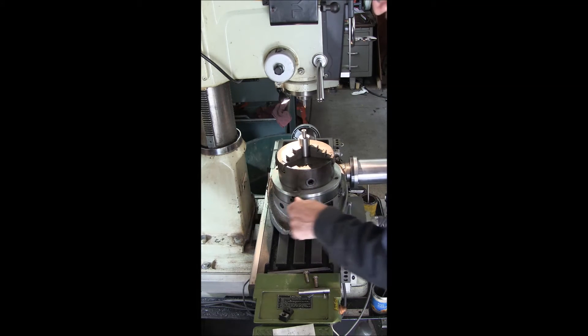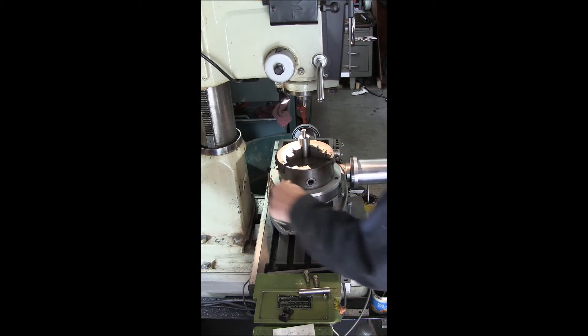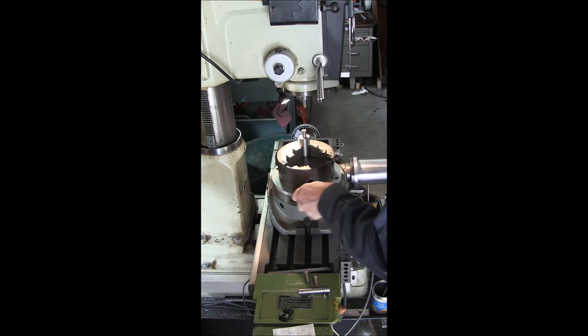This is an eight inch rotary table with a six inch chuck on it. This is the old chuck from my lathe before I got my six jaw.